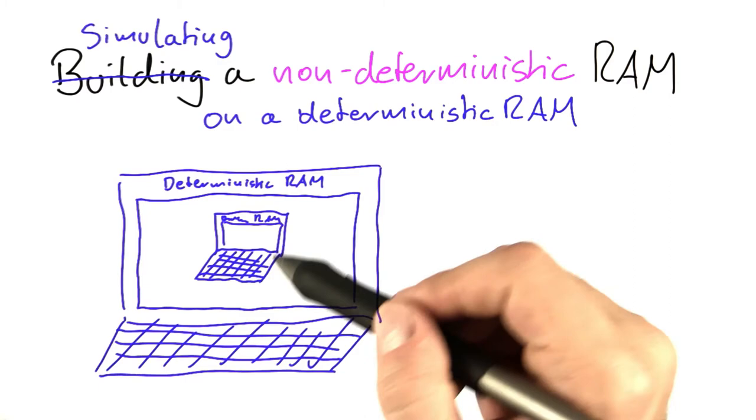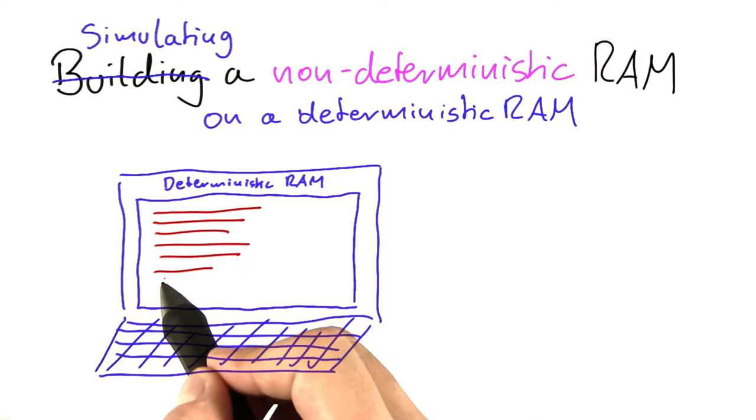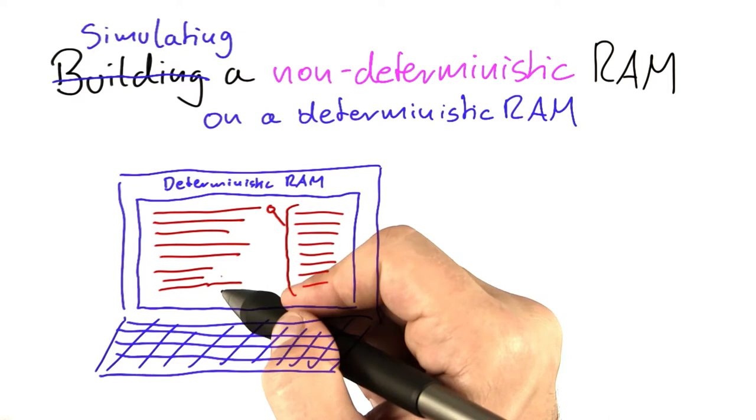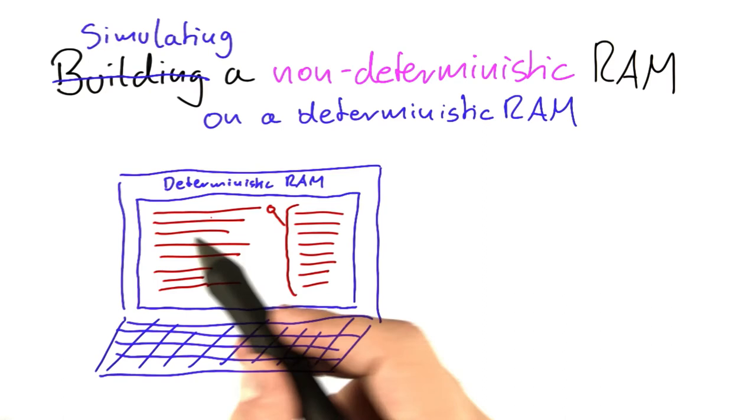And this might look a little bit more complicated than it actually is. So all it means is that if you had a program code that you run on a deterministic RAM, instead of running this code directly, you have another program.